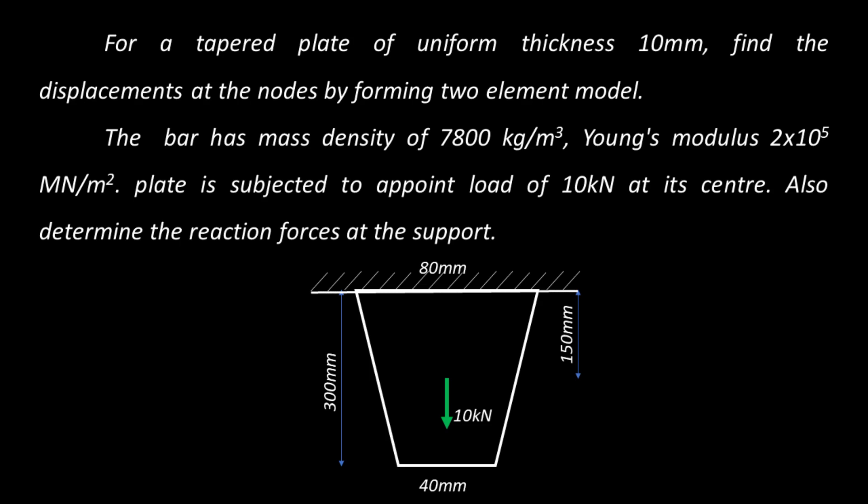For a tapered plate of uniform thickness 10 mm, find the displacement at the nodes by forming a two-element model. The bar has a mass density of 7800 kg per meter cube. Young's modulus is 2×10⁵ MN per meter square. The plate is subjected to a point load of 10 kN at its center, and also determine the reaction forces at the supports.